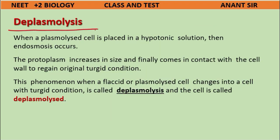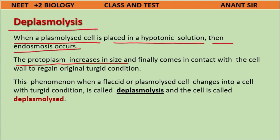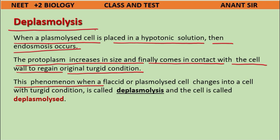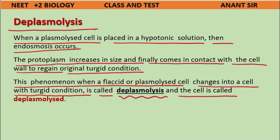De-plasmolysis: When a plasmolyzed cell is placed in a hypotonic solution, endosmosis occurs. The protoplasm increases in size and finally comes in contact with the cell wall to regain its original turgid condition. This phenomenon — when a flaccid or plasmolyzed cell changes into a turgid cell — is called de-plasmolysis, and the cell is called de-plasmolyzed.